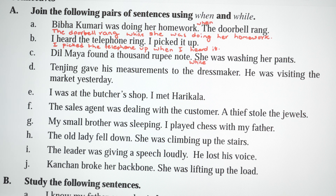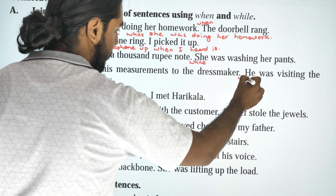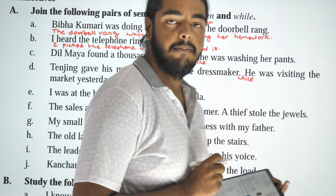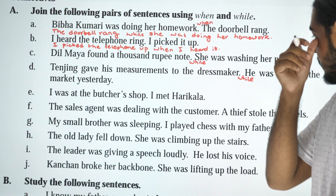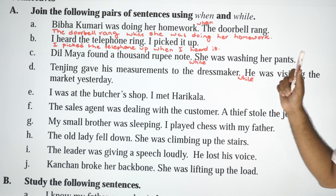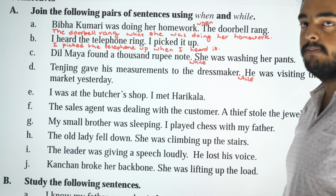Tenzin gave his measurements to the dressmaker. He was visiting the market yesterday. Answer: 'Tenzin gave his measurements to the dressmaker while he was visiting the market yesterday.' Or: 'He was visiting the market yesterday when he gave his measurements to the dressmaker.'